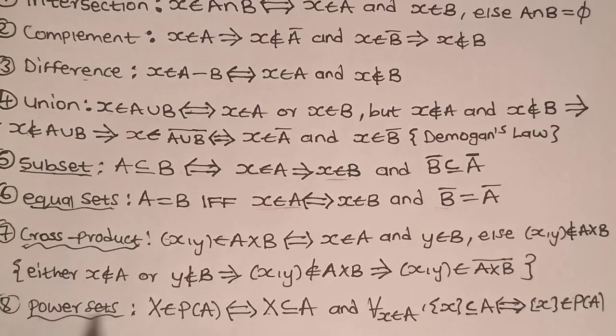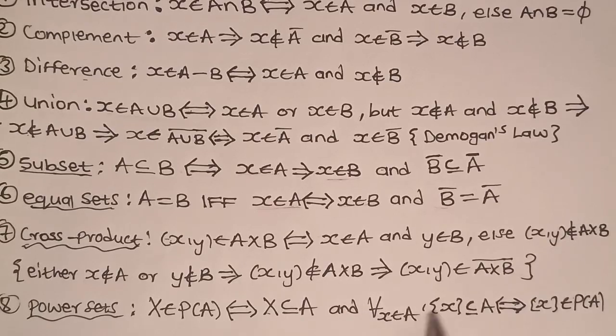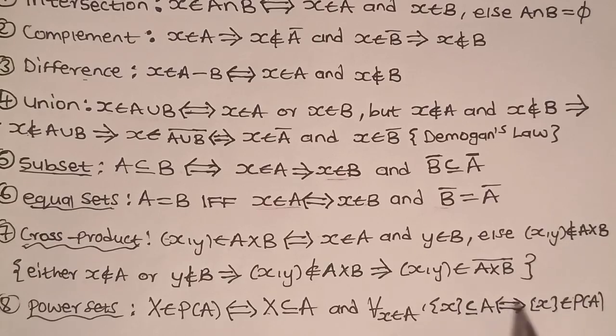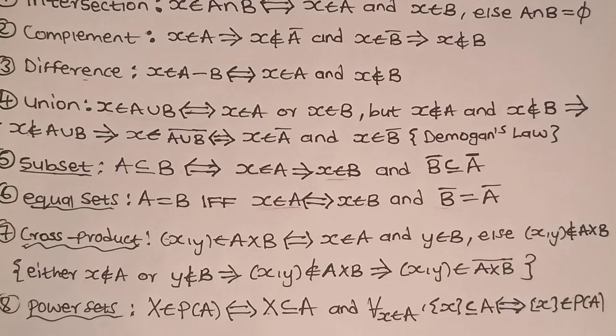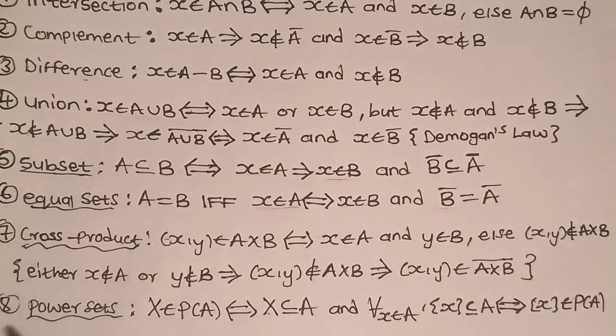Lastly, power sets: X is an element of power set of A, if and only if X is a subset of A. And for every small X an element of A, singleton X is a subset of A, if and only if singleton X is an element of a power set of A. These are the eight basic definitions that you need to know before beginning with set proofs.